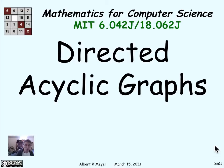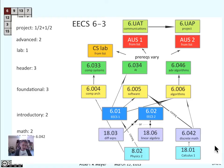Directed acyclic graphs are a special class of graphs that really have and warrant a theory of their own. Directed acyclic graphs is a lot of syllables, so they're called DAGs for short.